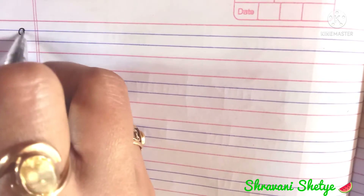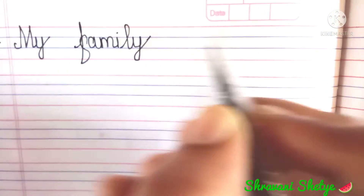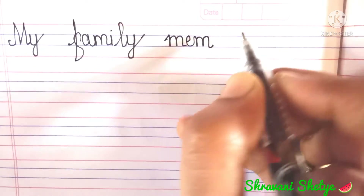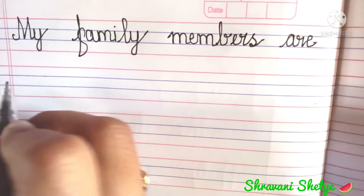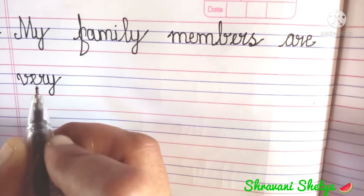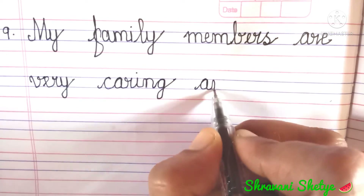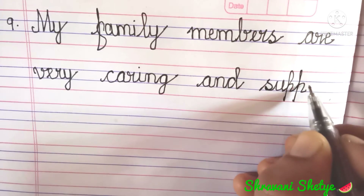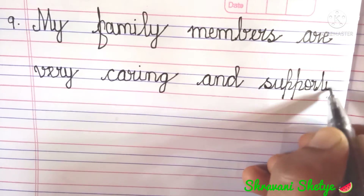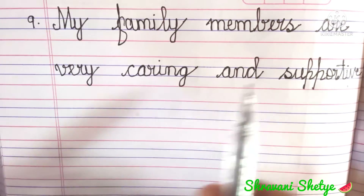Let us proceed to number 9. My family, M-Y, my, F-A-M-I-L-Y, family, M-E-M-B-E-R-S, members, A-R-E, are, V-E-R-Y, very, C-A-R-I-N-G, caring, A-N-D, and, S-U-P-P-O-R-T-I-V-E, supportive. My family members are very caring and supportive.